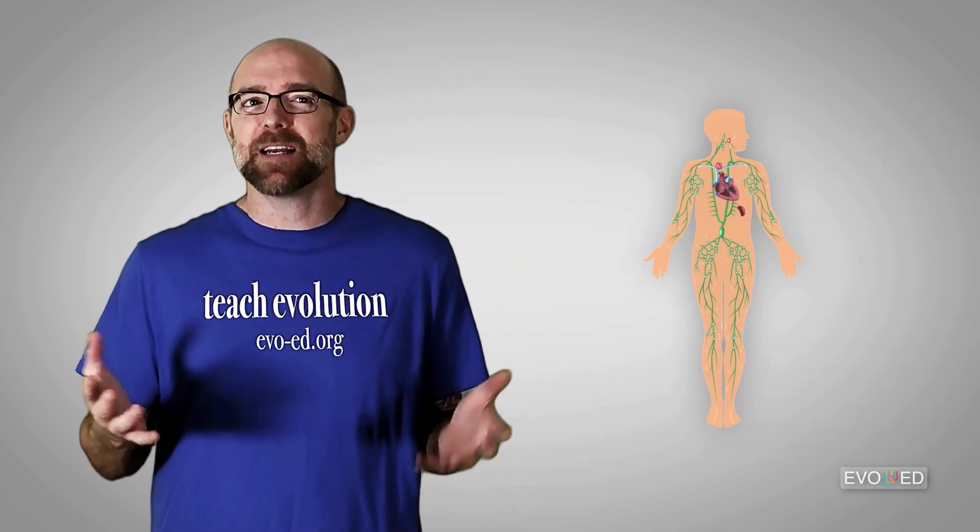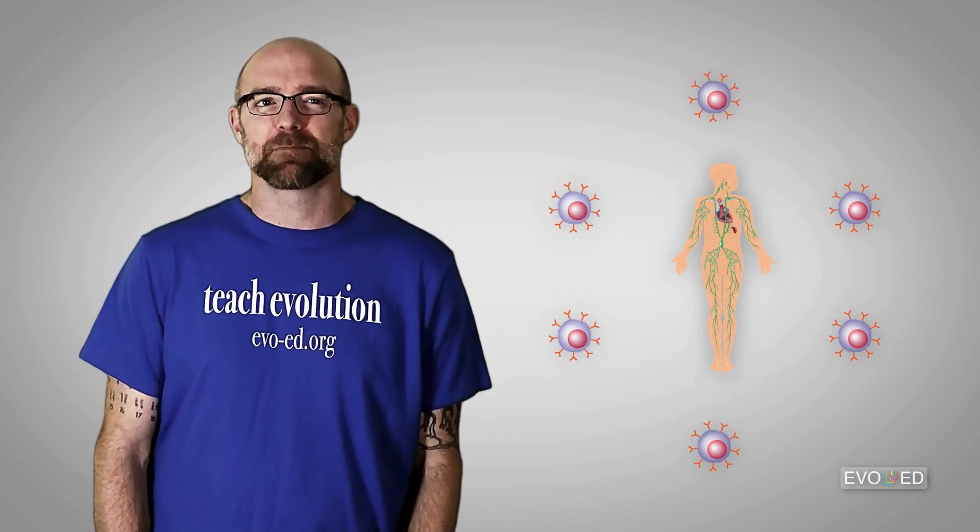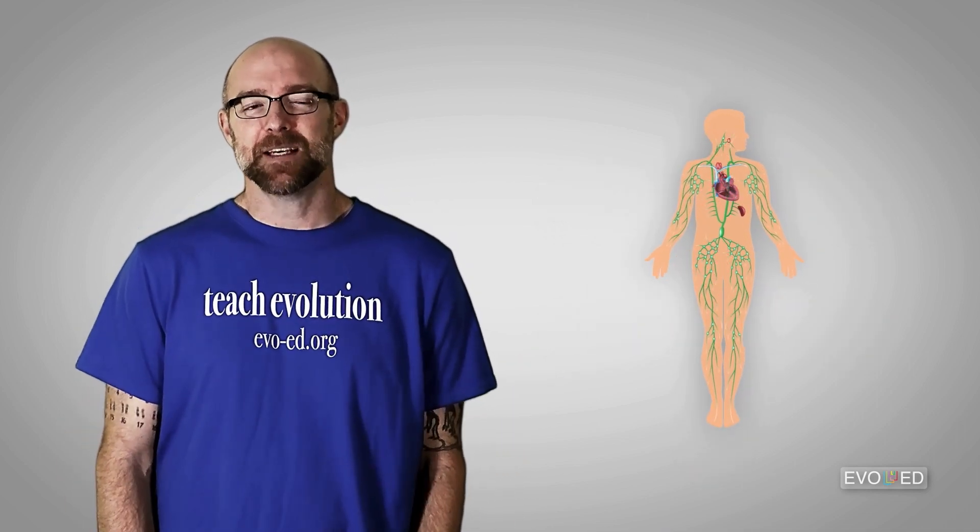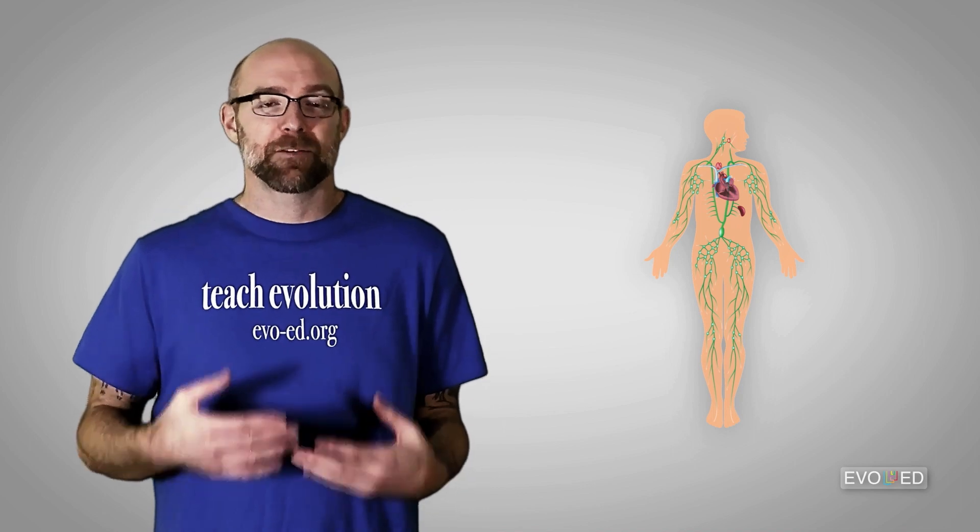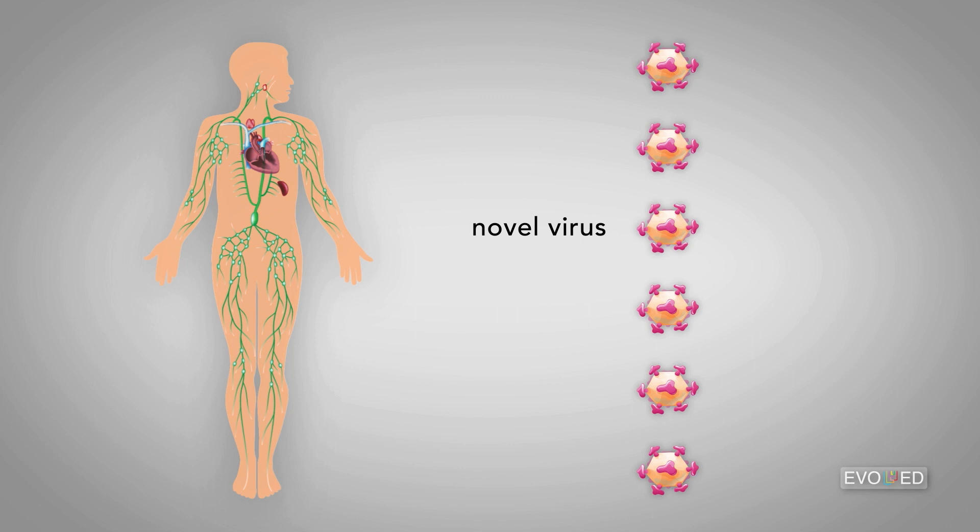Now, before we get to that, why do we even need vaccines? If our immune system can generate B cells and antibodies to fight off viral infections, then why bother with something as seemingly intrusive as a vaccine? Well, unfortunately, when our immune system is faced with a novel virus that it hasn't seen before, it can take a little bit of time for our B cells to start to produce the right kinds of antibodies to neutralize that novel virus.